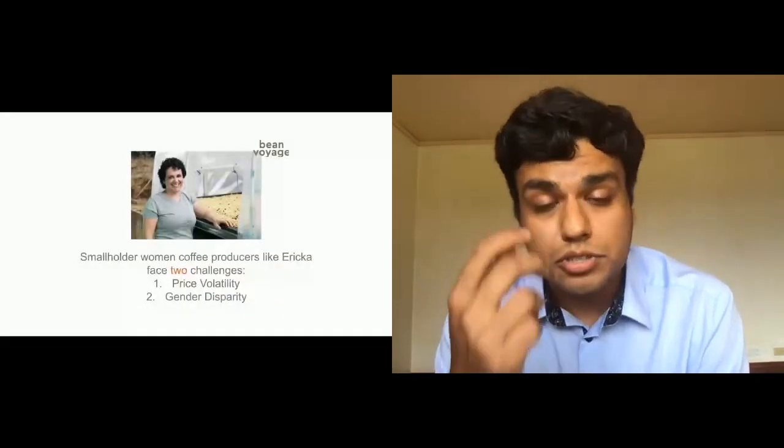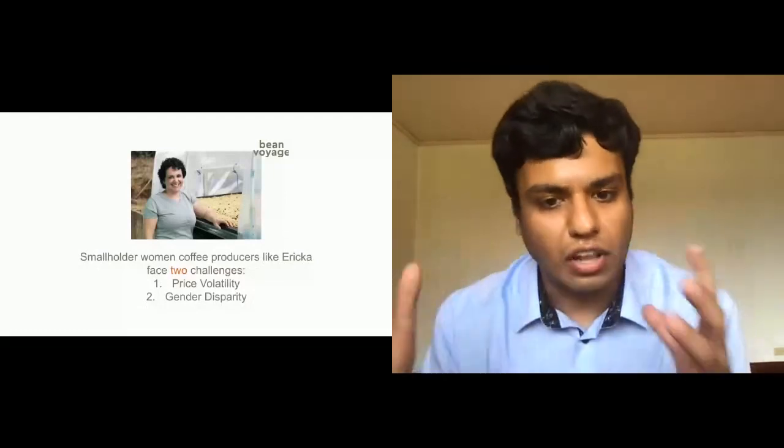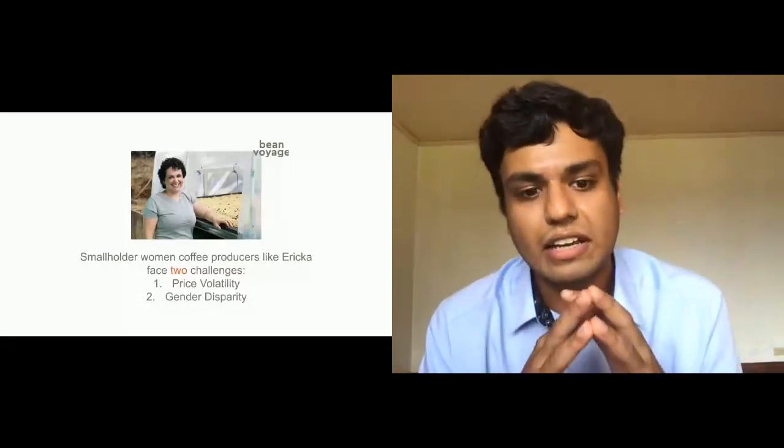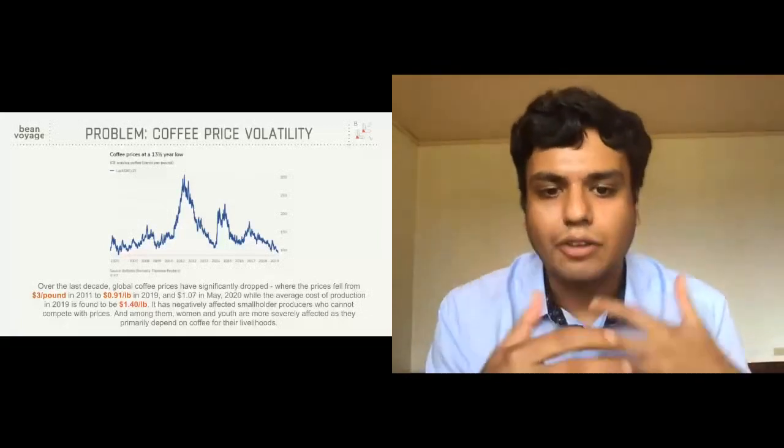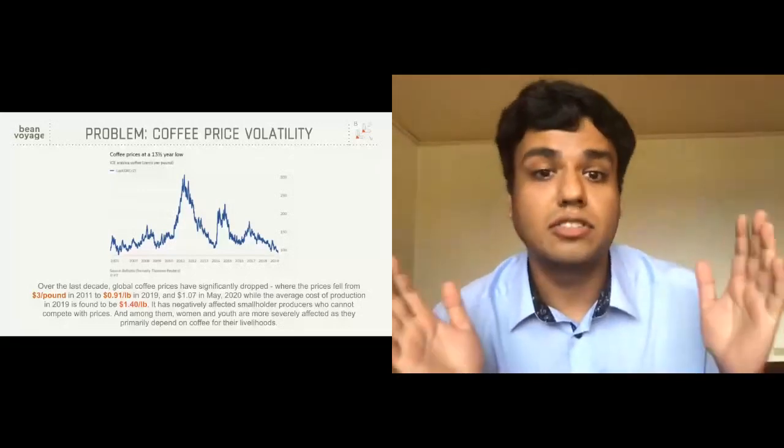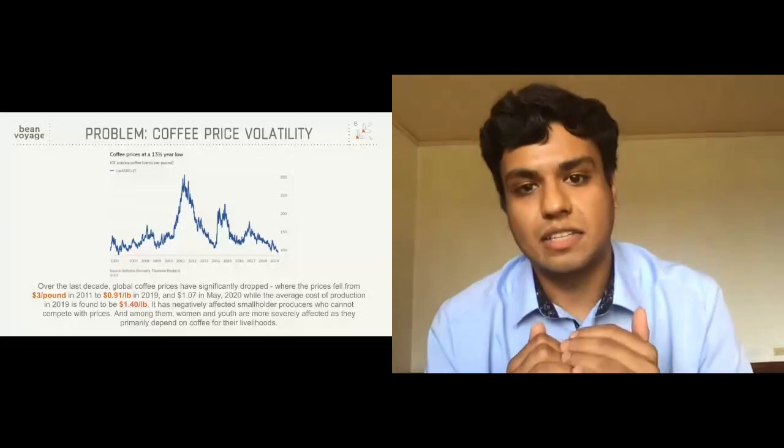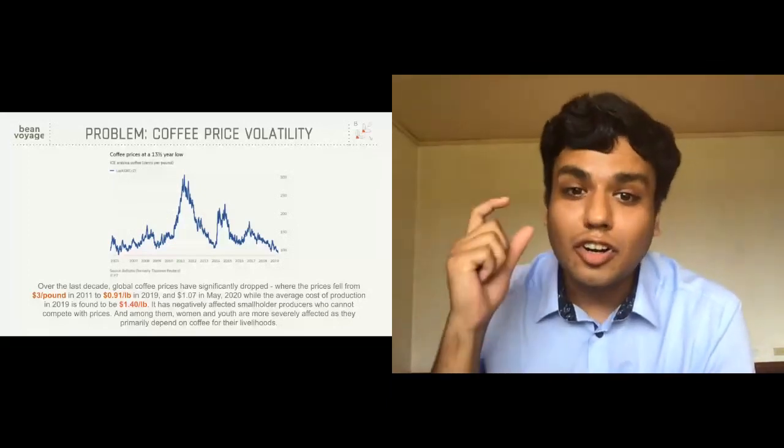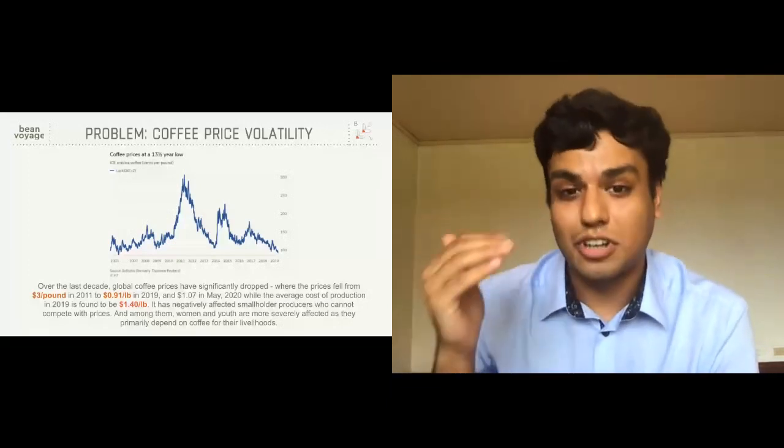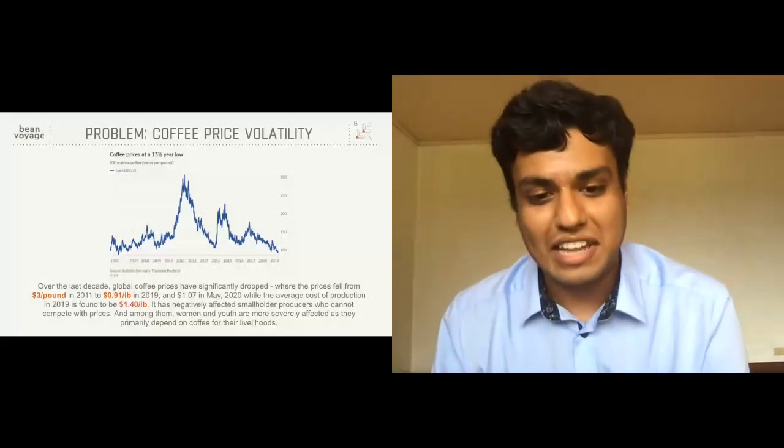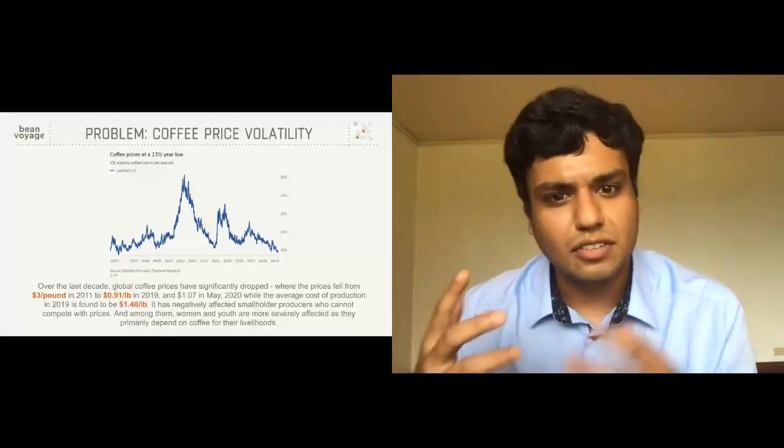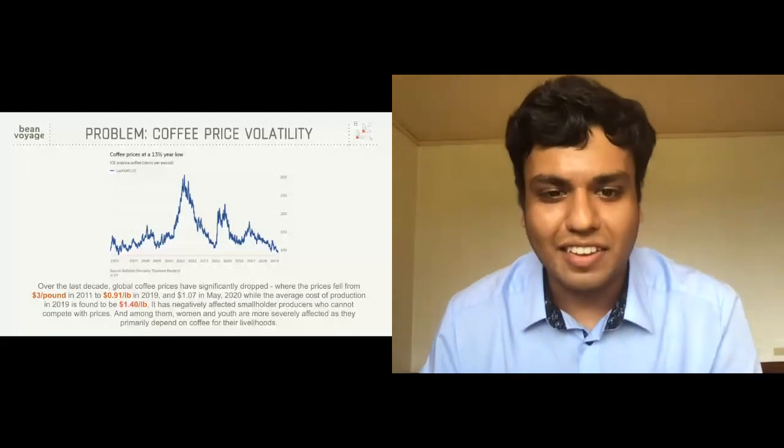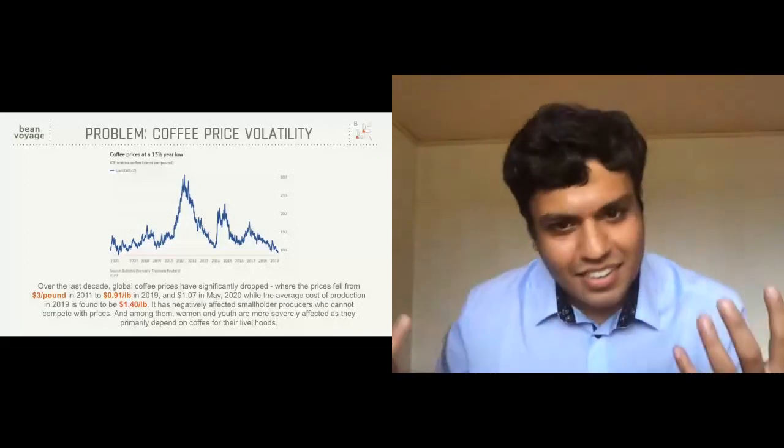And we started researching and understanding that producers like Erika were facing two challenges. The first one was the price volatility, and the second one was gender disparity. Coffee prices over the last 10 decades. And this is very interesting for all of you who are interested in supply chain, the commodity market, which is where most of our products like coffee, cacao, tea are traded, has been extremely volatile, especially for coffee in the last 10 to 13 years. It's been as low as 91 cents per pound of coffee. And if you look at the average cost of production, the average cost is $1.4 per pound. So they're earning 91 cents for something that they're spending $1.4 for. So there's a clear loss. You don't need to study economics or business to understand that. So that got us thinking of why are producers living in this really difficult environment, whereas we as consumers would go out there and purchase a $3, $4 cup of coffee, and really think that the people at the end of this, when you look at their photos, they're smiling, they're probably making a good living.